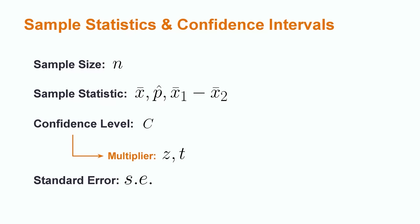The sample size, sample statistic, confidence level, and standard error are all required to calculate a confidence interval. Notationally, the confidence level is frequently associated with the value 1 minus alpha, which itself is a significance level. This is important when consulting lookup tables for the multipliers. For example, a 95% confidence interval leads to a 5% significance level.